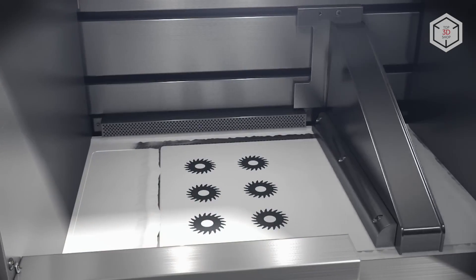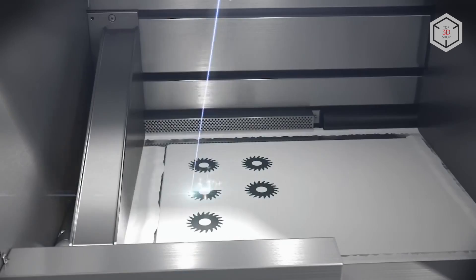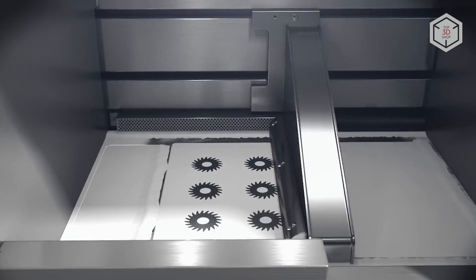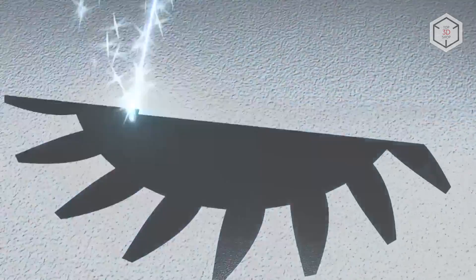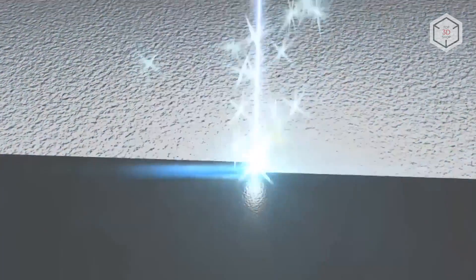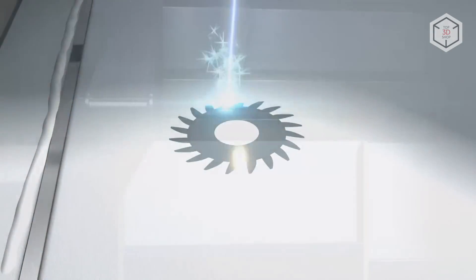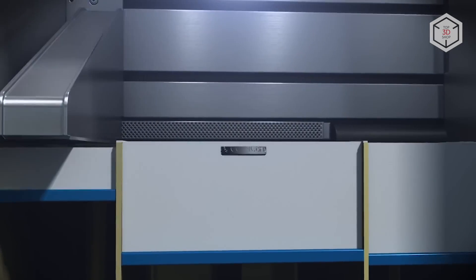So what is the essence of this additive method? In short, potent lasers selectively fuse metal powder layer by layer. The required volume of powder is placed on a platform which, after fusing a layer, is lowered to a predetermined height equal to the layer thickness. The next layer of material is applied on top and the procedure is repeated until the part is finished.